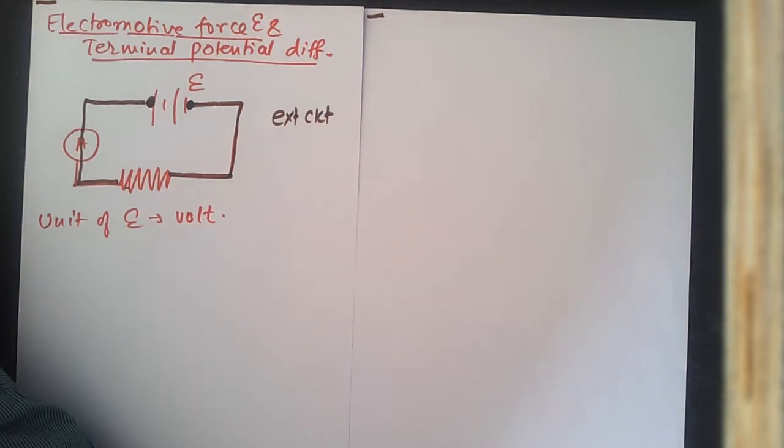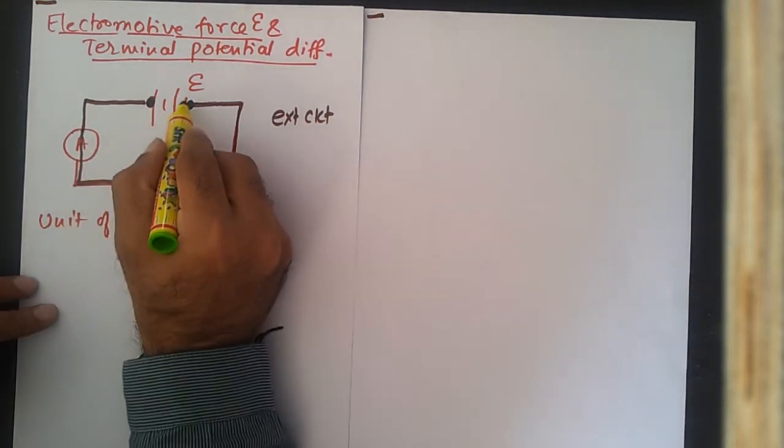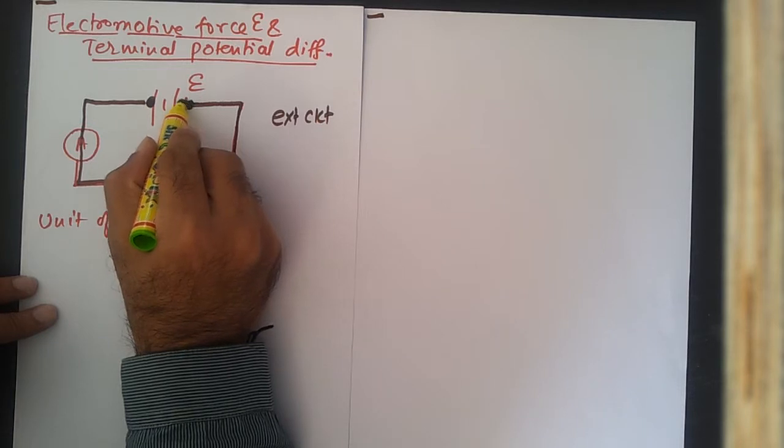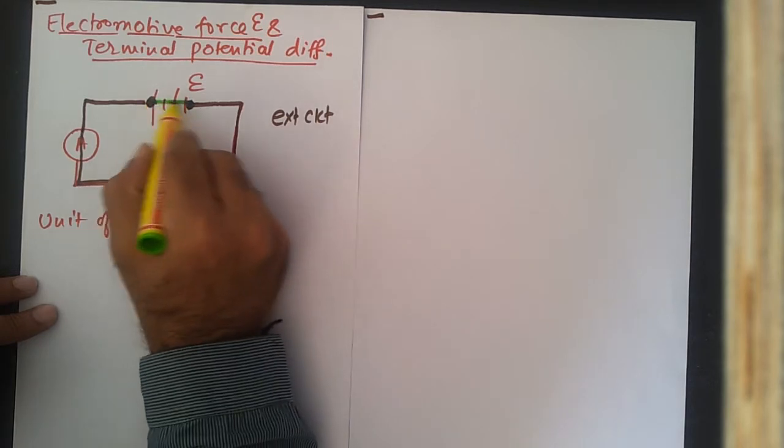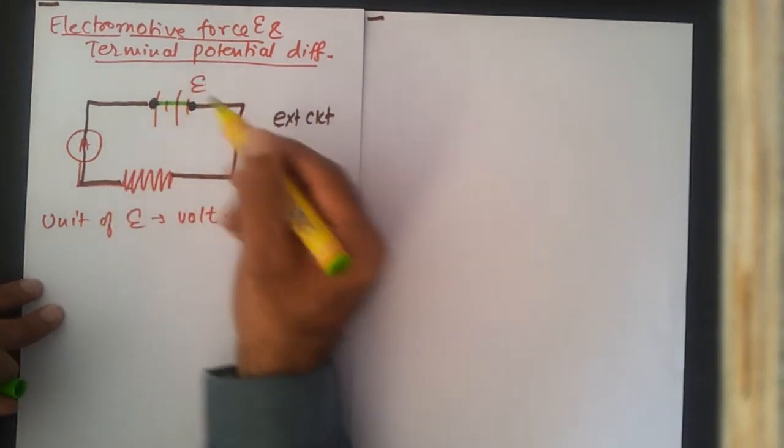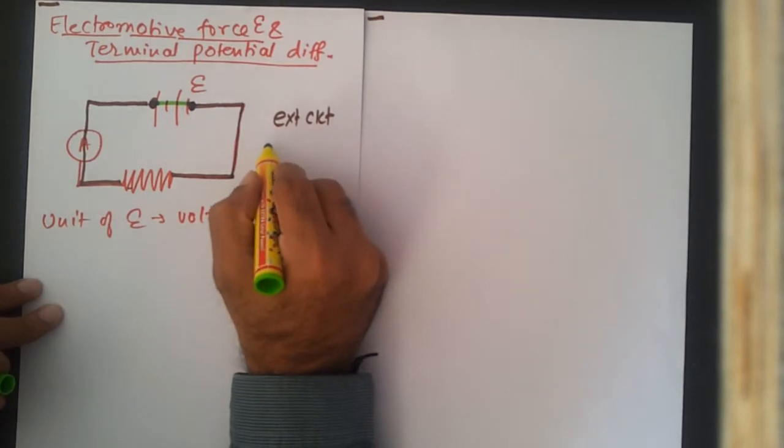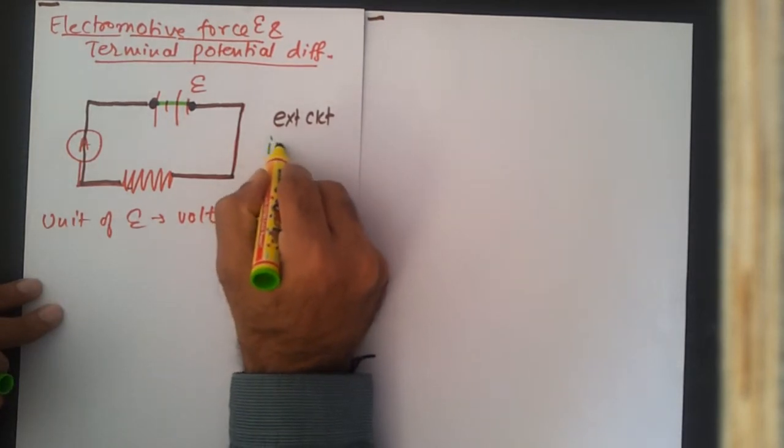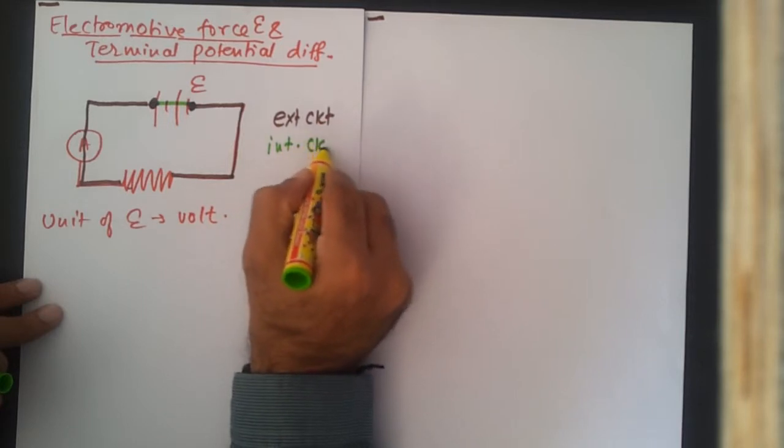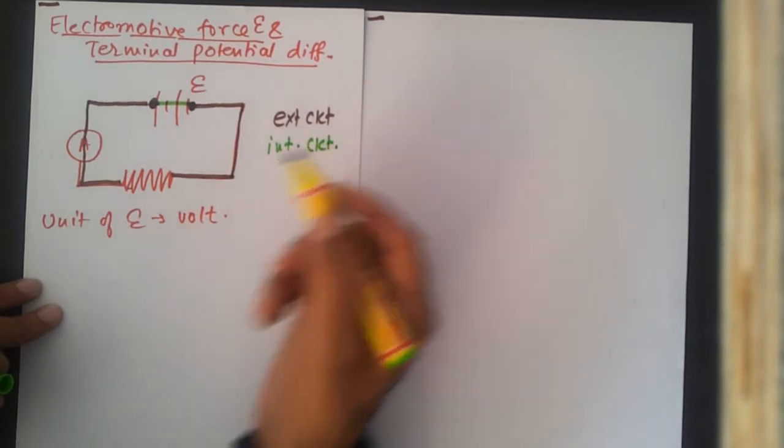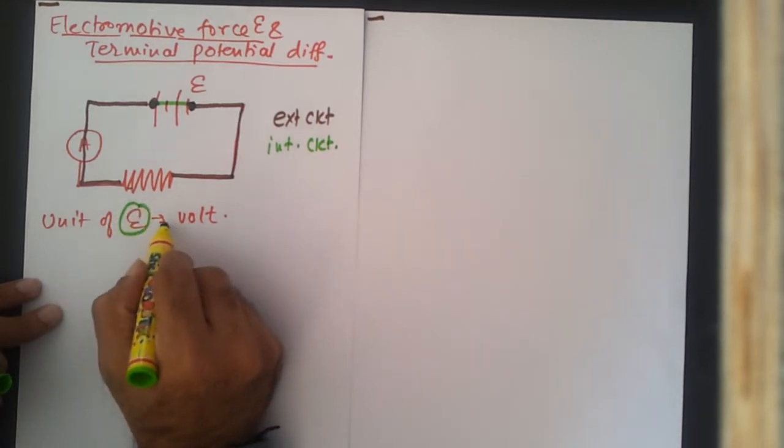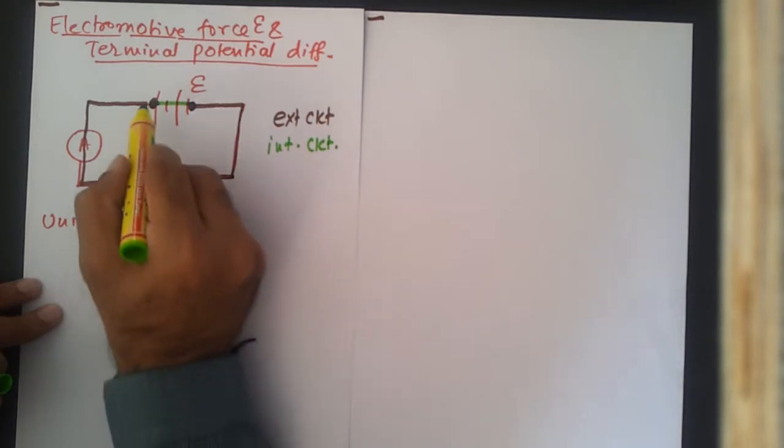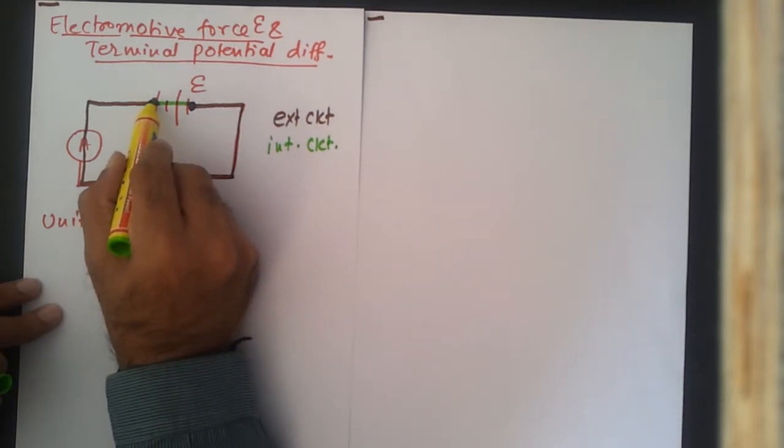Now what is epsilon? Epsilon is the energy which is required to make the current flow in the external circuit as well as the internal circuit.